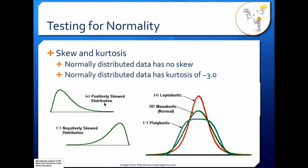Kurtosis describes how sharp your peak is or how flattened it is. If you have a mesokurtic distribution, that is your standard normal data, and that kurtosis is somewhere around 3.0. When you have a leptokurtic peak, you have a very sharp peak, which means your standard deviation is small. When you have platykurtic data, your data is flattened — it has a larger standard deviation and is flatter than normal. Note that you need a relatively large sample size to make a good judgment on skew and kurtosis. If you have a sample less than about 100, it's going to be difficult to tell if you truly have skew or kurtosis in your data.